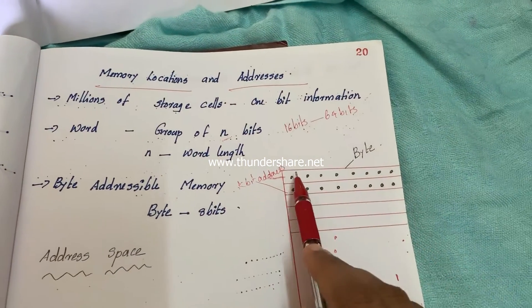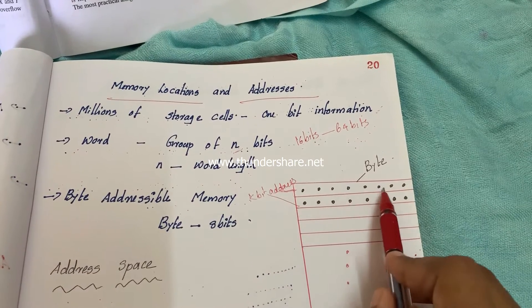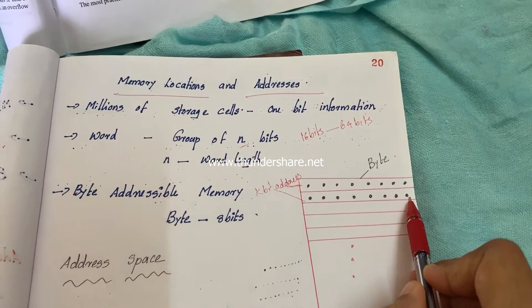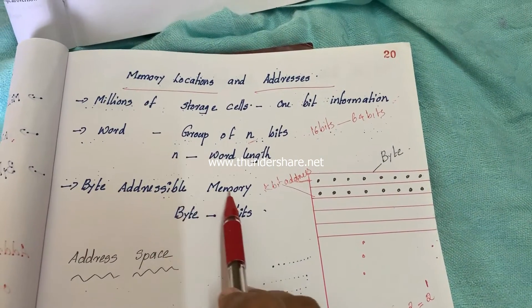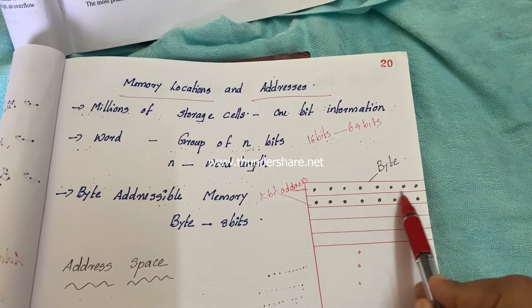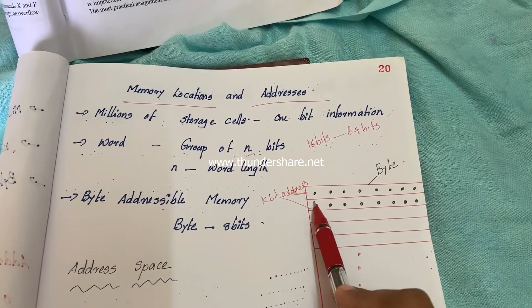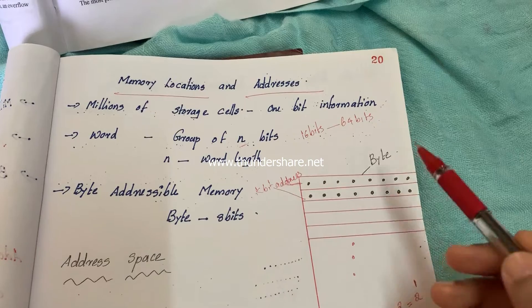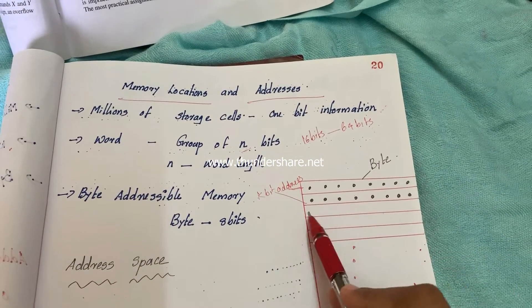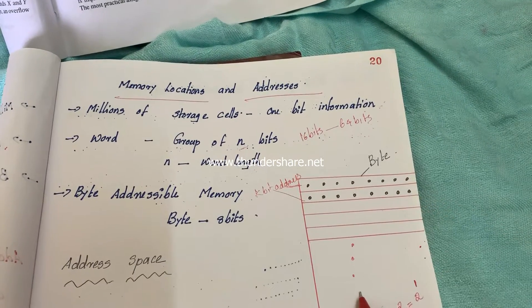Consider this diagram. This shows 8 bits of information, then another 8 bits. This system follows a byte addressable system. So this first group of 8 bits forms a byte and this byte needs an address. This next group of 8 bits forms another byte and also needs an address. The third byte needs yet another address, and so on.